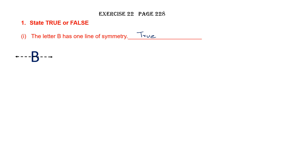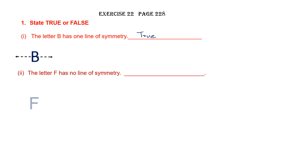So let's write true. Second statement: the letter F has no line of symmetry. We cannot have a line of symmetry for the letter F; we cannot divide it into two equal parts. So the letter F has no line of symmetry, and this statement is also true.